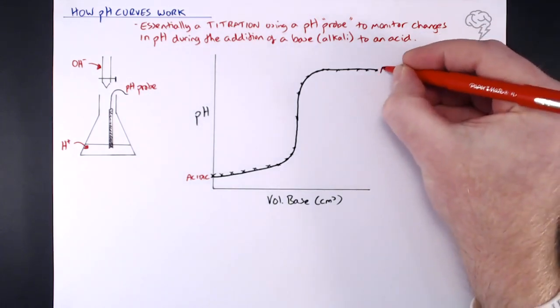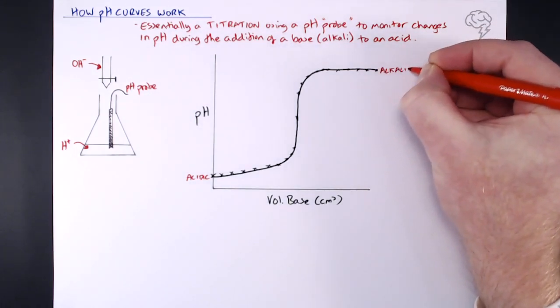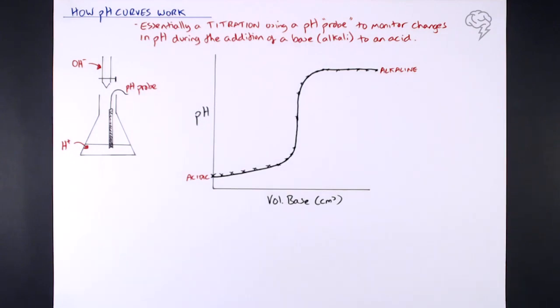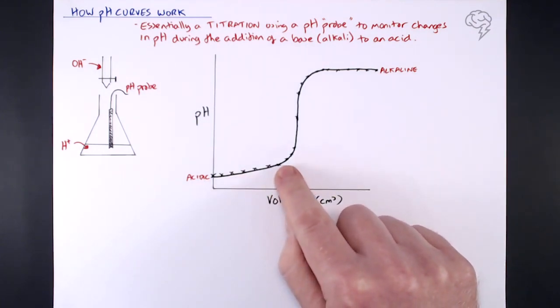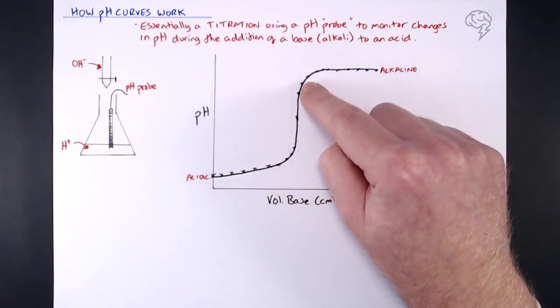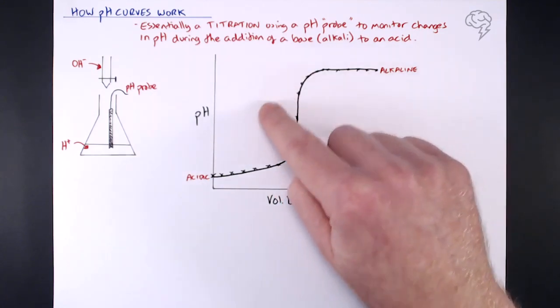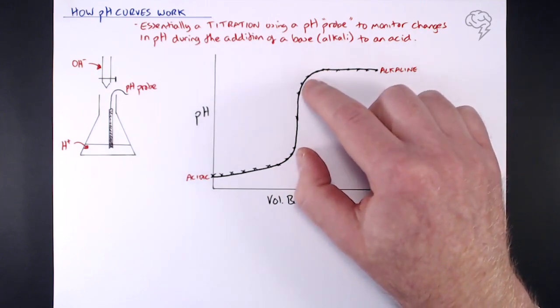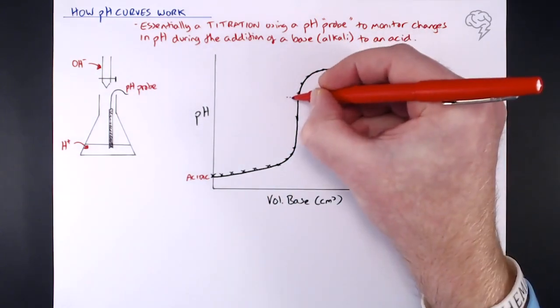So of course by the time we've gone right through neutralization, this is going to be alkaline at the end, maybe pH 12 or something like that. You can see here this gradual increase and then we get a very sharp increase. This here, this is known as our equivalence point. So this vertical section is the point at which we have neutralization.